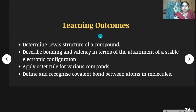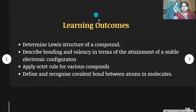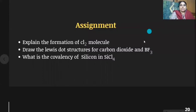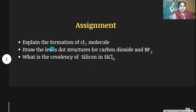In this topic we learned how to determine the structure of a compound, describe bonding and valency in terms of attaining a stable electronic configuration, apply the octet rule for various compounds, and define and recognize covalent bonds between atoms in molecules. Assignment: explain the formation of chlorine molecule; draw the Lewis dot structures for carbon dioxide and boron trifluoride; and find the covalency of silicon in silicon tetrachloride.